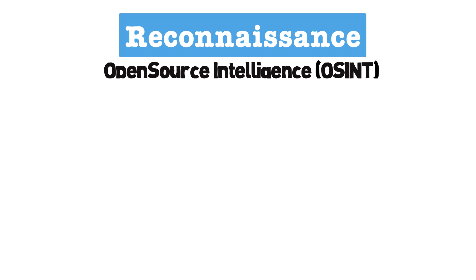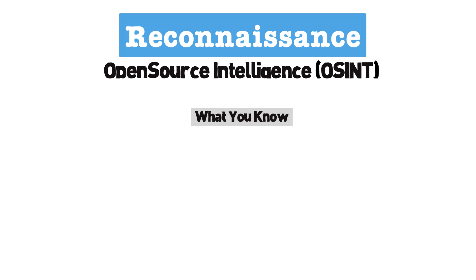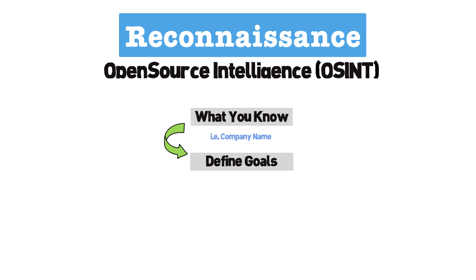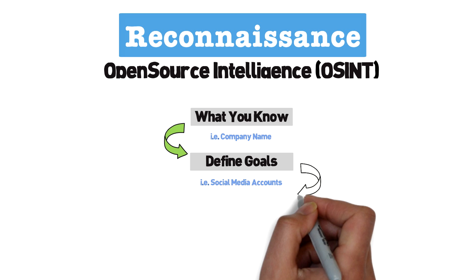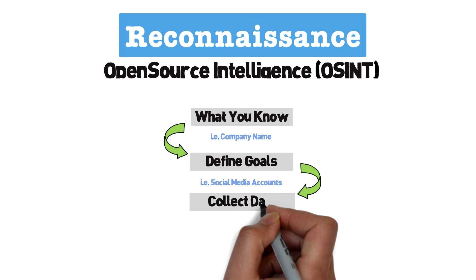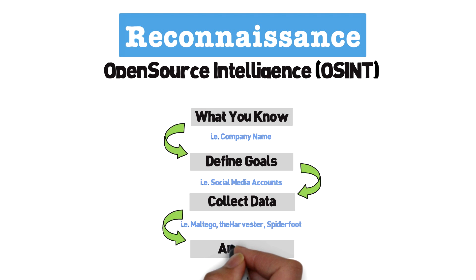The OSINT process starts with something you know about the target. Something as simple as a company name can be used as a starting point from which we work to acquire something else that could be leveraged. We then define what kind of information we're after. For example, if we're after user credentials, we know we need to acquire an email address and possibly social media accounts before we can send a targeted spear phishing campaign. The third step is where we use the tools we'll discuss shortly to collect information about our target, as different tools have different purposes.